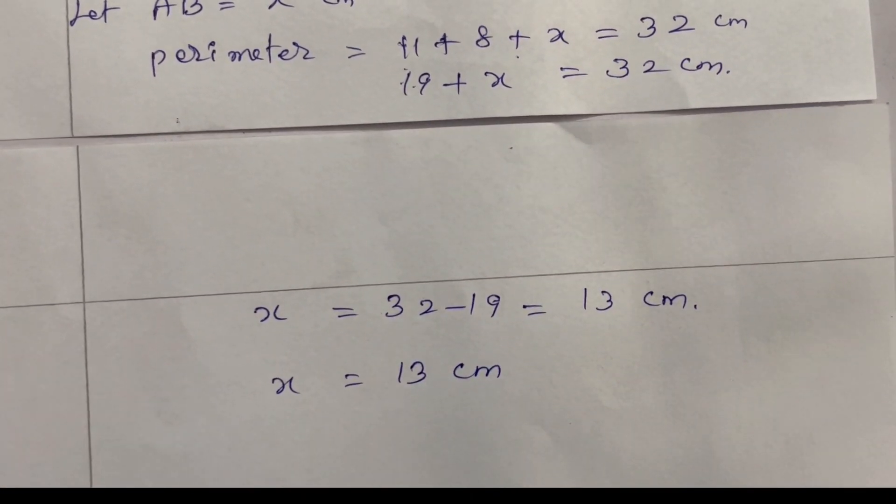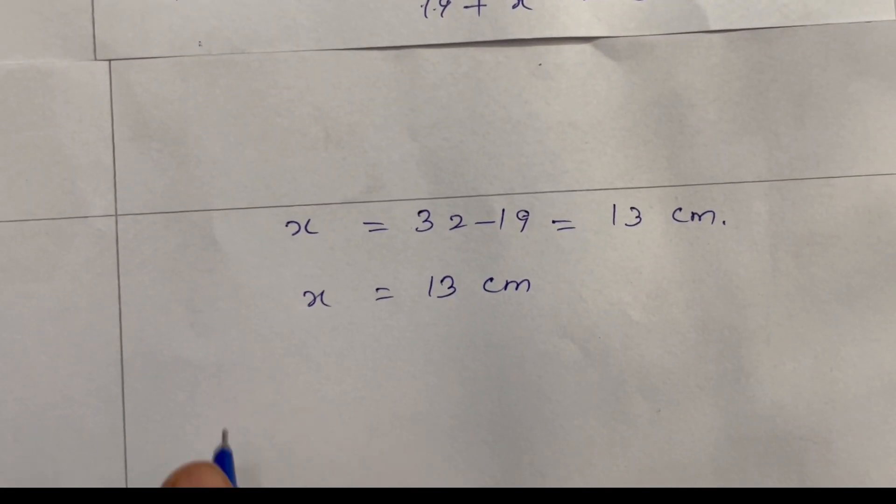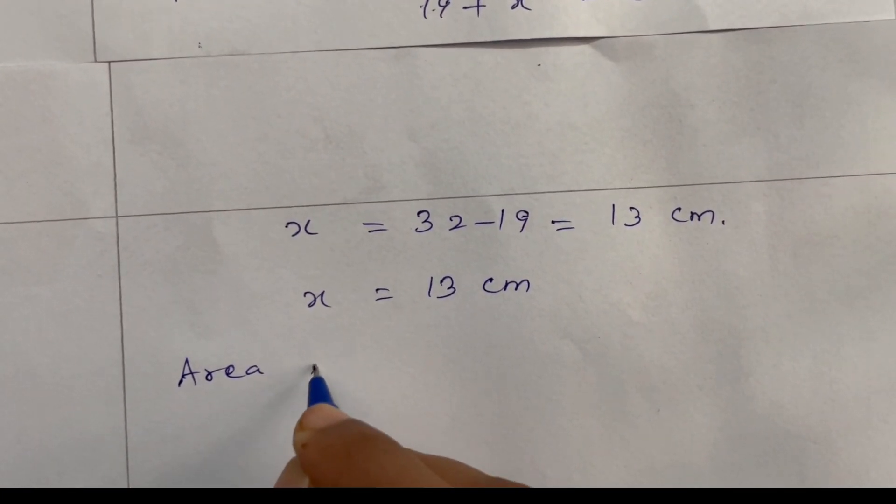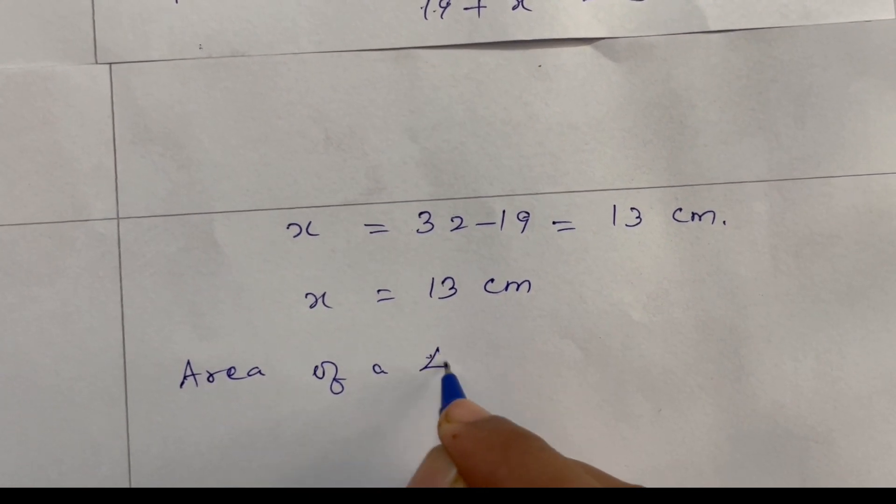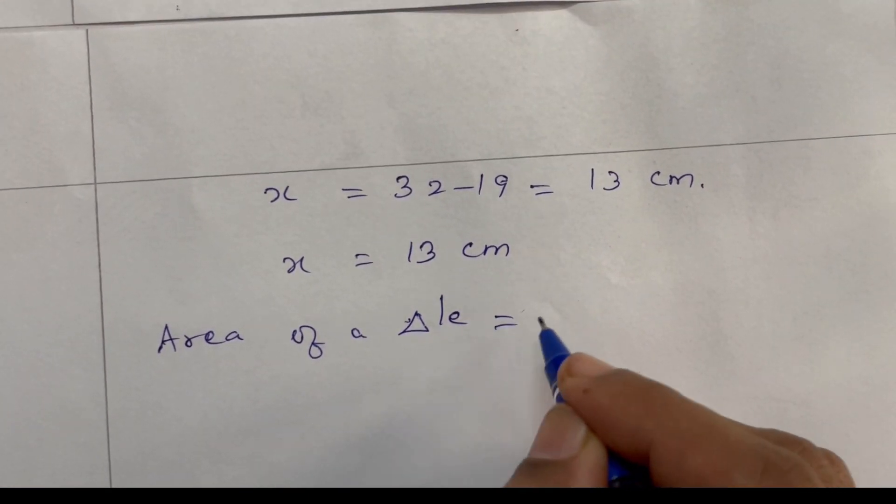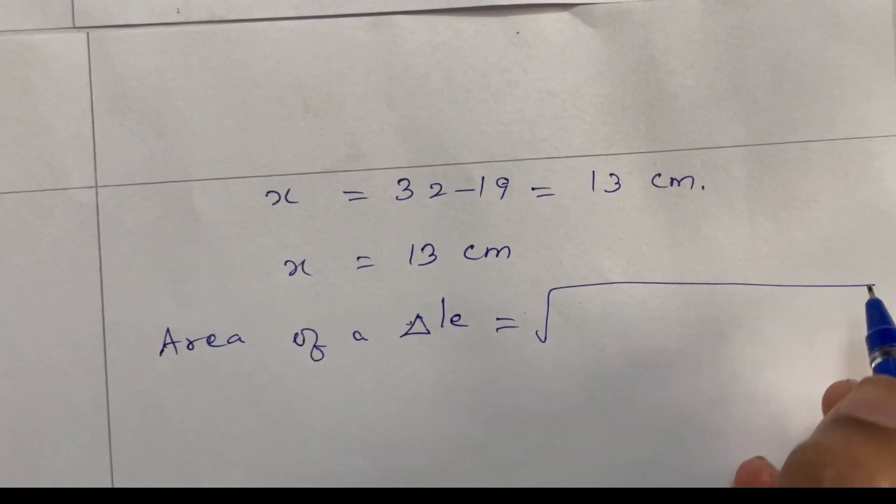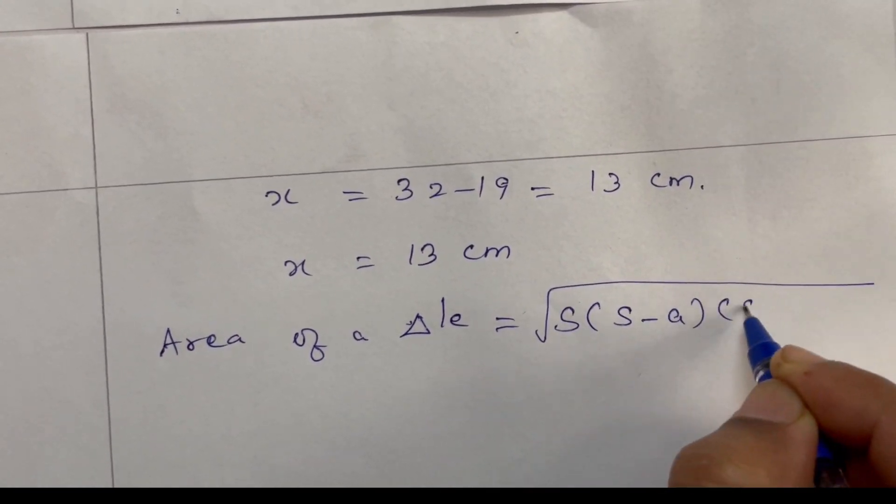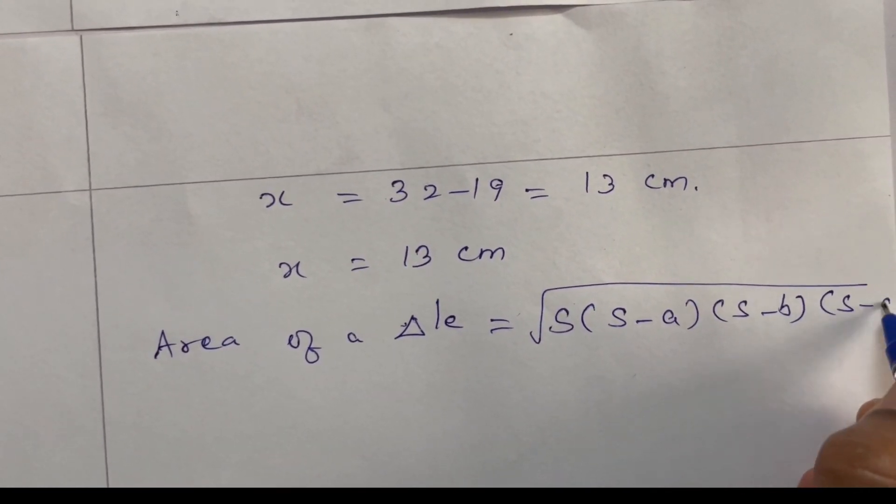Now three sides are known. Area of a triangle formula is equal to square root of s into s minus a into s minus b into s minus c.